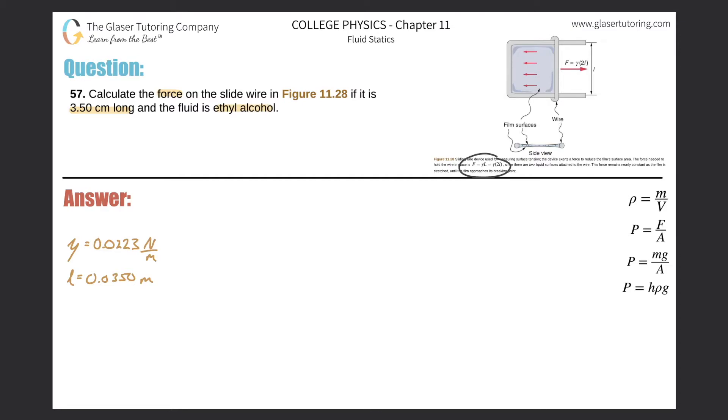Alright, so within this description below, they give us a particular formula to find the force. It tells us that the force is going to be equal to gamma, which is the surface tension of the fluid, multiplied by two times the length of this particular slide wire.